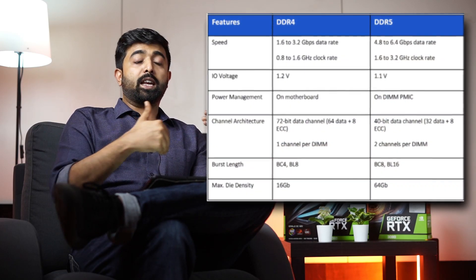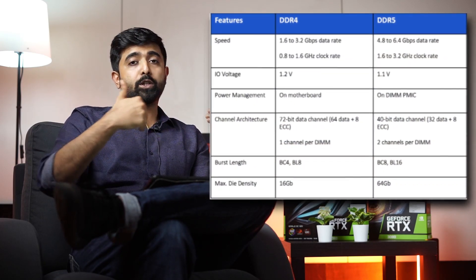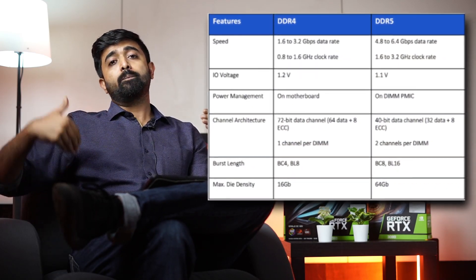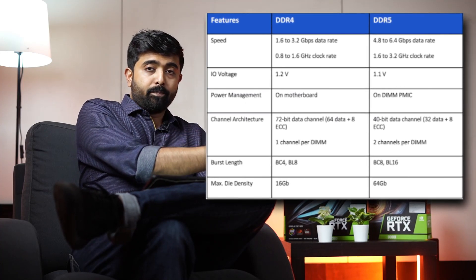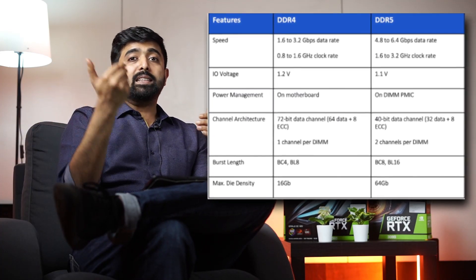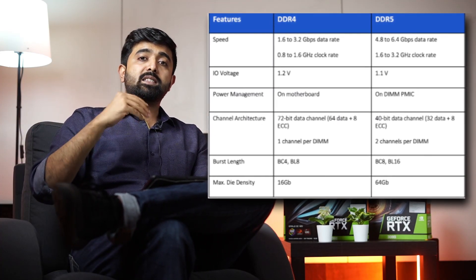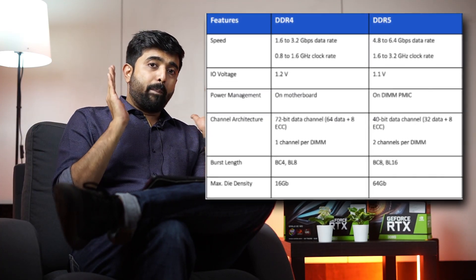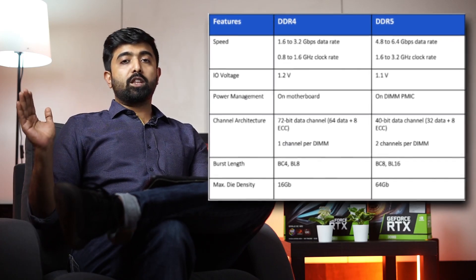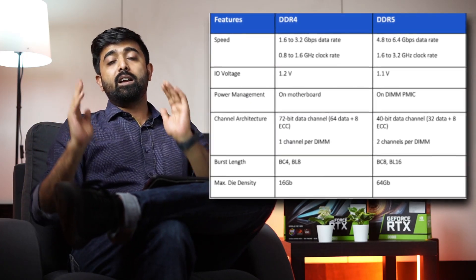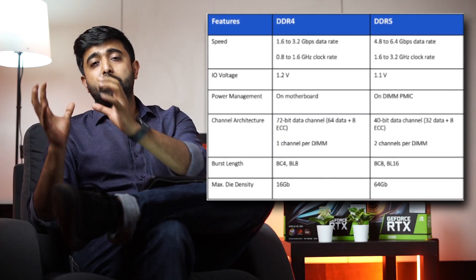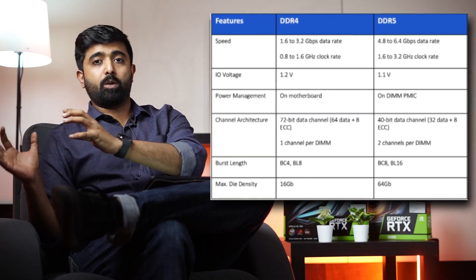Now, DDR4 RAM ki max speed yaani megahertz pe jo chal raha tha wo 4400 tak hai. Aur uska max density — yaani ek single stick ki maximum memory — it's 128GB for most servers and 64GB for regular desktops.